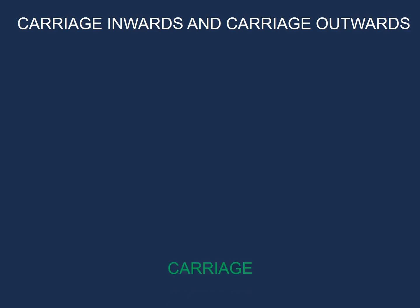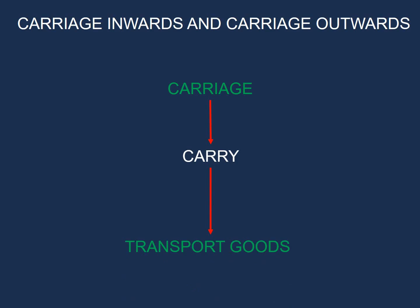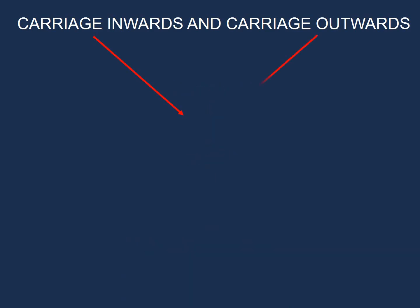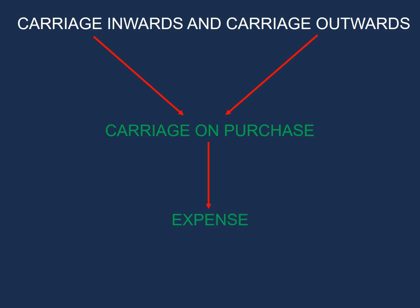This example will include carriage inwards and carriage outwards. The word carriage is derived from the word carry, which means to transport goods. Carriage inwards and carriage outwards has to do with carriage on purchases, and both of these accounts will be an expense. This is not to be confused with returns inwards and returns outwards, where one is an expense and the other is an income.